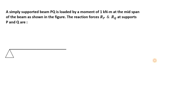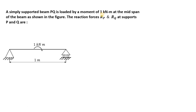Let us see what is the problem statement. As you can see, this is a simply supported beam PQ and it is loaded by a moment of 1 kilonewton meter acting at the mid-span of the beam as shown in the figure. We have to find out the vertical reactions RP and RQ at the supports P and Q.